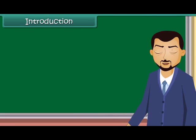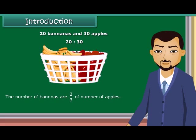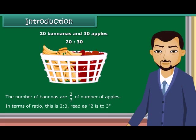Introduction: Ratio means comparing two quantities. A basket has two types of fruits: 20 bananas and 30 apples. The ratio of the number of bananas to the number of apples is 20 is to 30. The number of bananas are 2/3 of the number of apples. In terms of ratio, this is 2 is to 3, read as 2 is to 3.